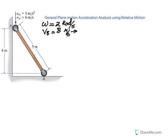What we want to determine for this problem is: given acceleration of A, and knowing omega from the IC method, find the acceleration of point B and the angular acceleration alpha of the rod at this instant. Remember, the vertical distance is 4 meters, the bar is 5 meters, so the horizontal distance is 3 meters — a 3-4-5 triangle.